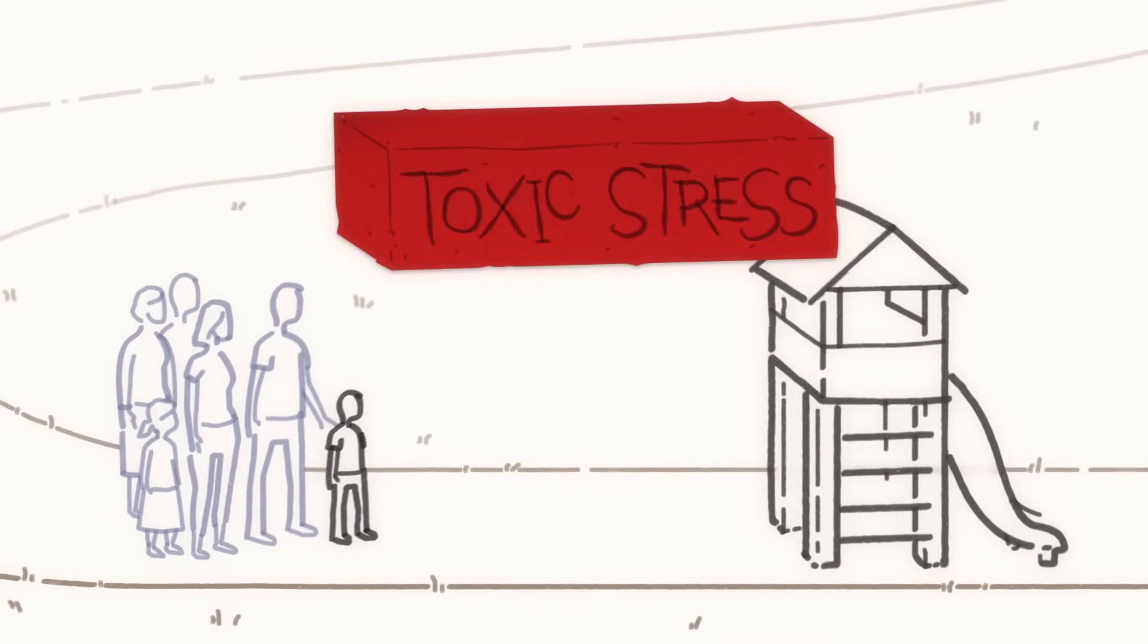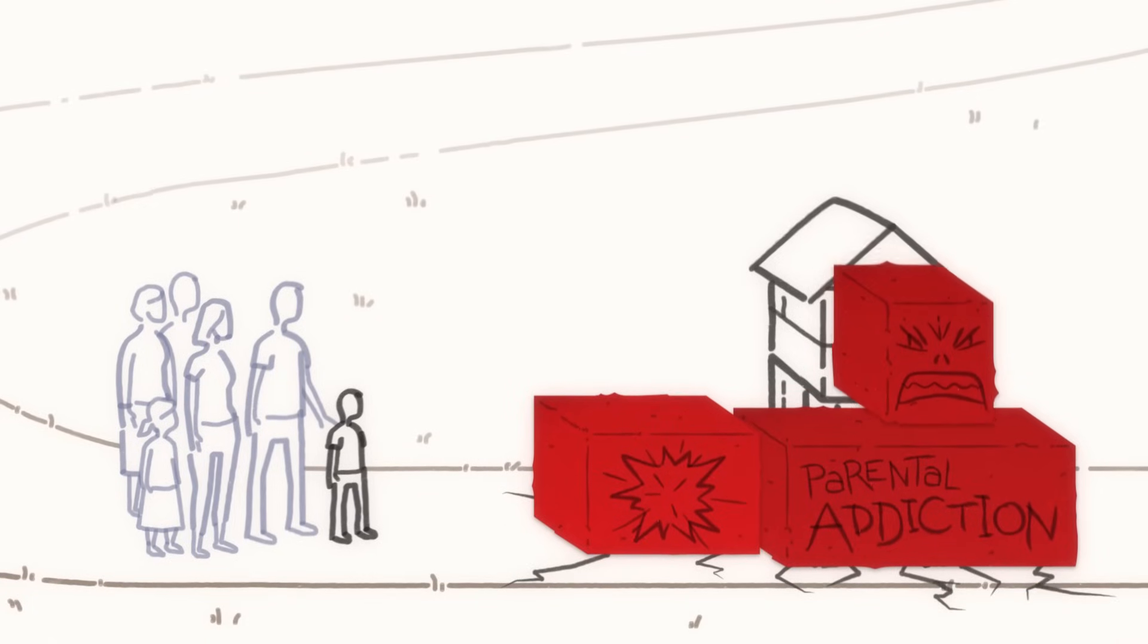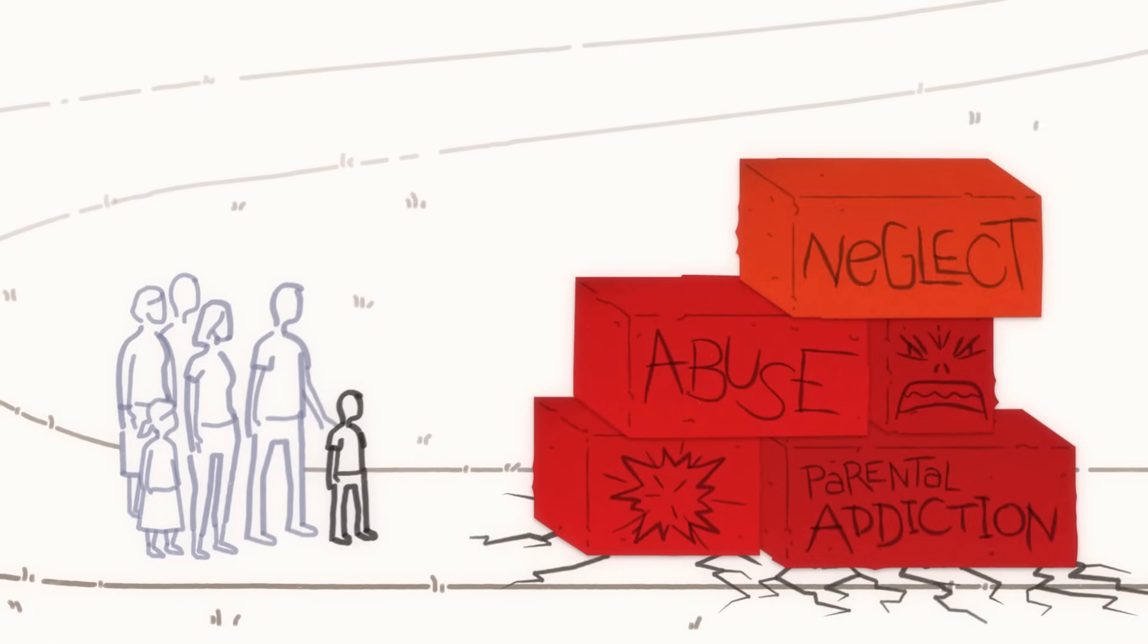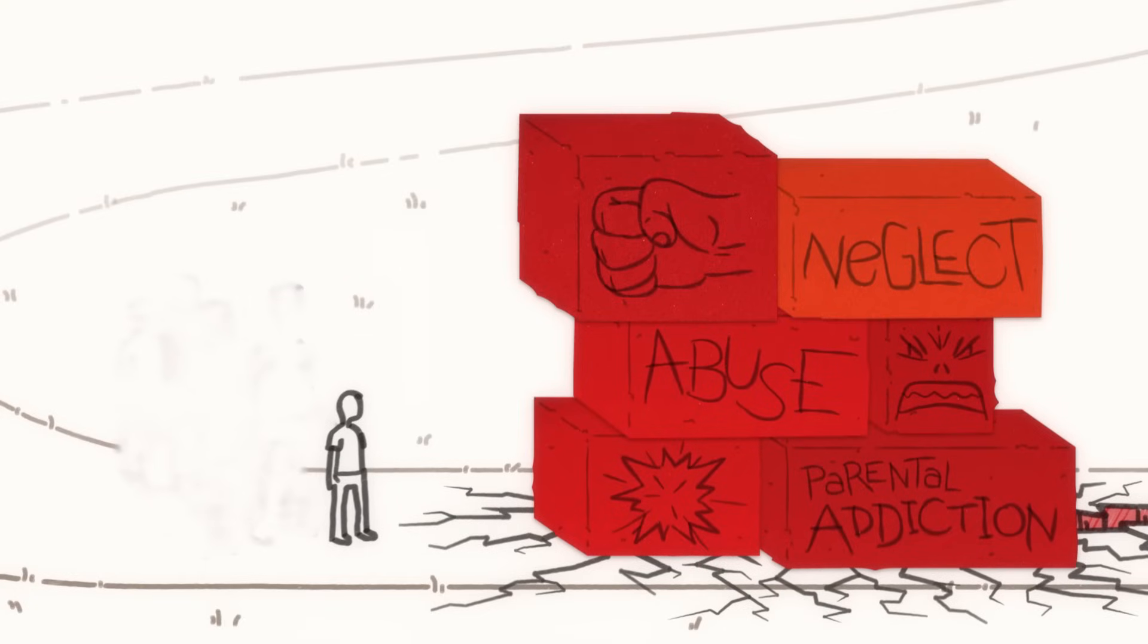Another kind of stress, called toxic stress, is bad for brain development. If a child is exposed to serious ongoing hardships like abuse and neglect, and has no other caregiver in his life to provide support, the basic structures of his developing brain may be damaged.